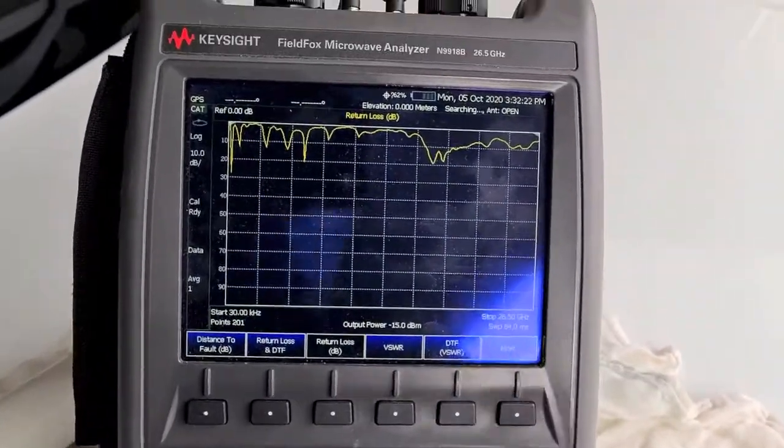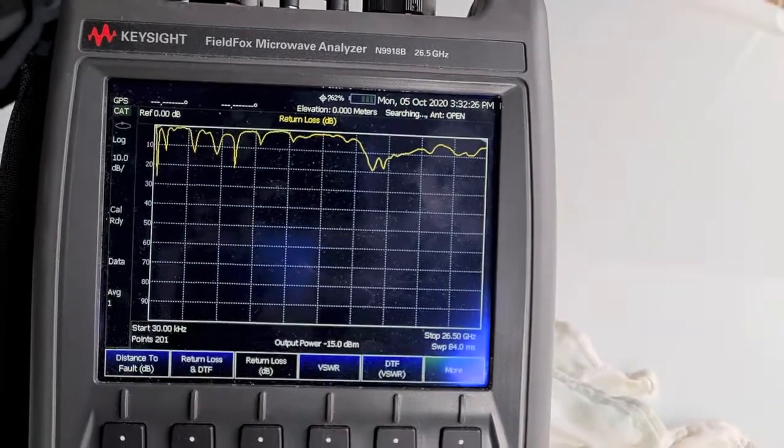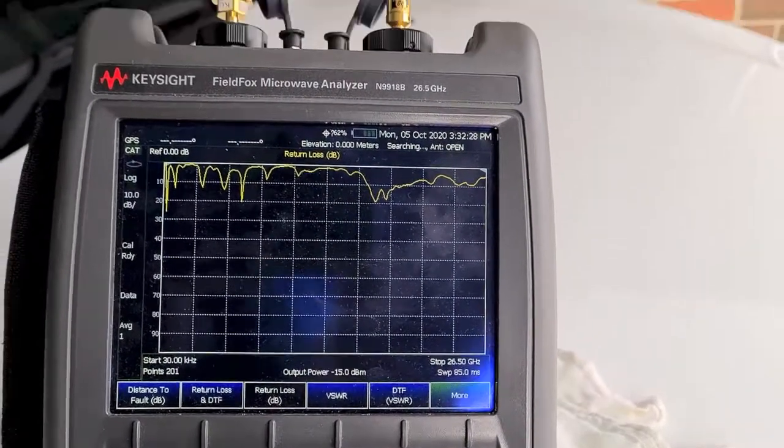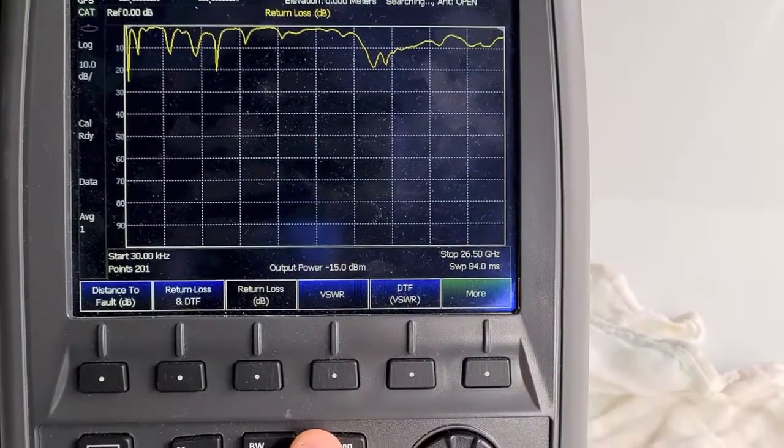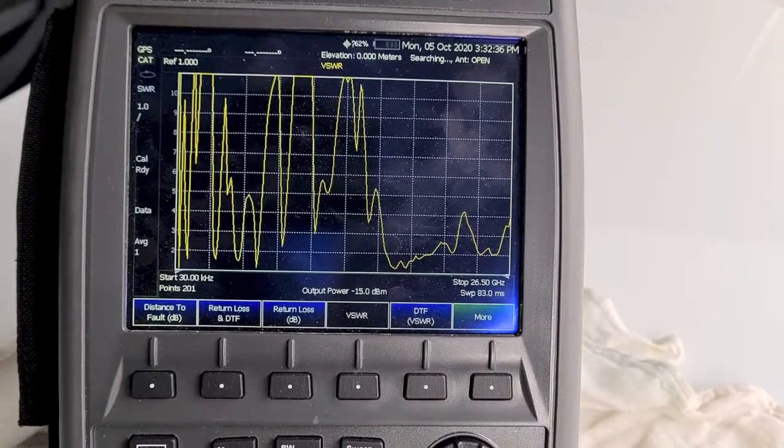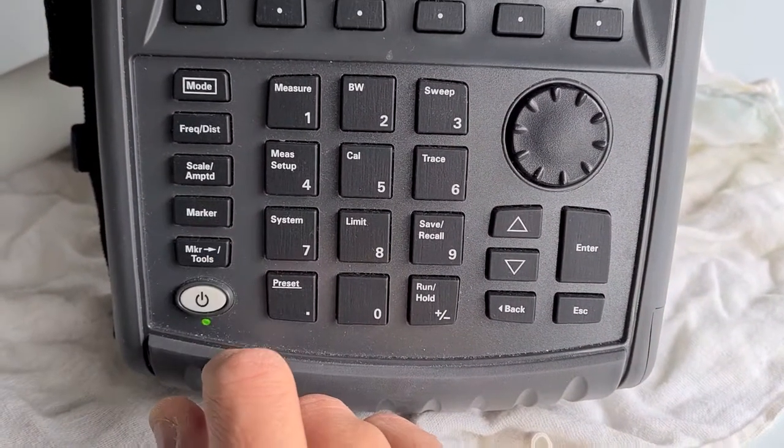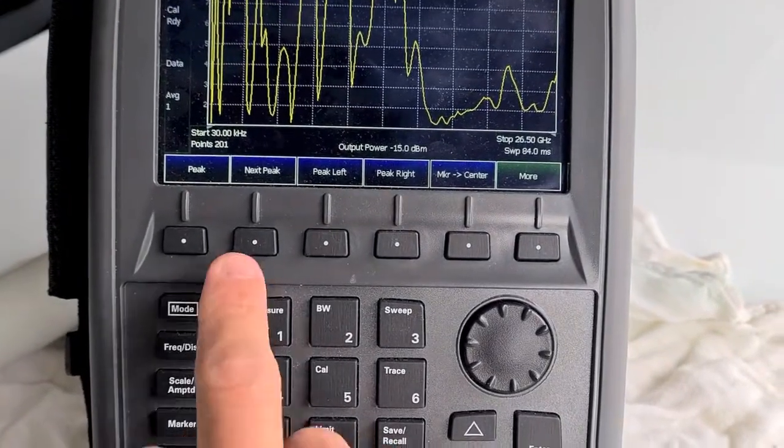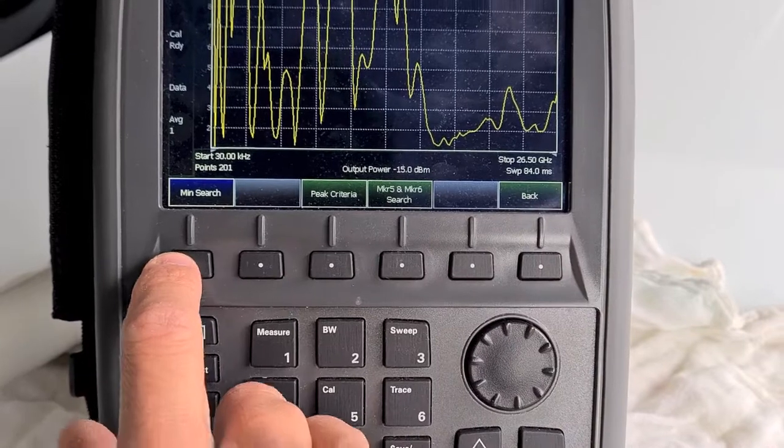First of all, if you have just a cable antenna test feature in field box, we only work with port one. So let's go to VSWR and let's go to marker functions, marker tools, and this is the menu that you're getting. Then menu, more, and then main search.